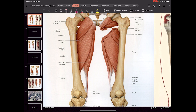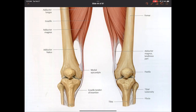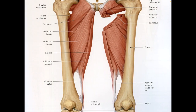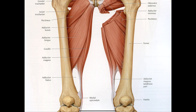Adductor longus — let me check these names. Adductor longus, gracilis is this outside one, and the pectineus is the interior one. Those are the three I'm going to have you do on your homework.